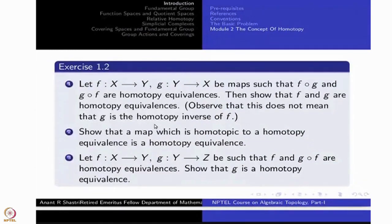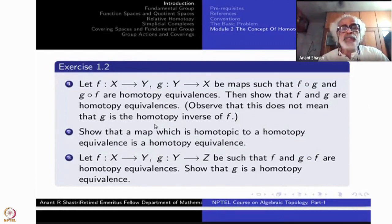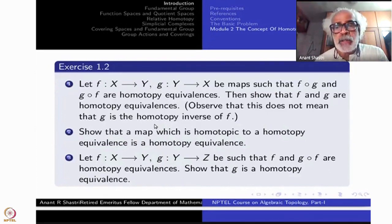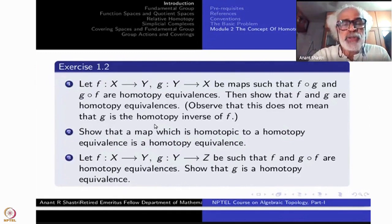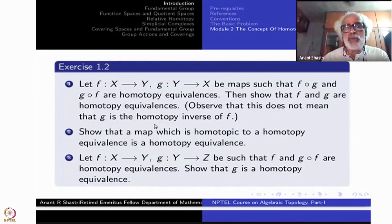Now, come to a few more exercises. Suppose you have F and G, F: X to Y and G: Y to X, such that F composite G and G composite F are homotopy equivalences. I am not saying that F and G are homotopy inverses of each other. I am not saying that the composite F composite G is homotopic to identity of Y, nor G composite F homotopic to identity of X. But they are themselves homotopy equivalences. Then show that F and G are homotopy equivalences. I caution you, I do not mean that G is the homotopy inverse of F. It may not be, it may be, it does not matter. Here you have to think a little bit.